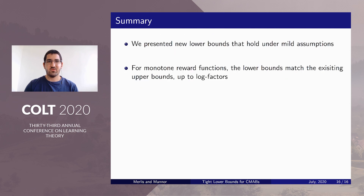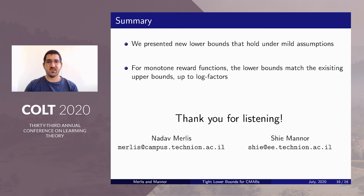To summarize, in this work we presented new lower bounds for CMAB problems, valid under very mild assumptions — index invariance and differentiability. Specifically, for monotone reward functions, we showed that our lower bounds match the upper bounds of BCUCB up to logarithmic factors. Thank you for listening, and feel free to contact us if you have any questions about the work.